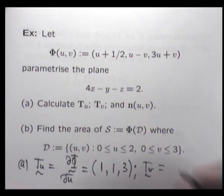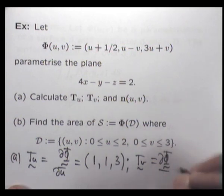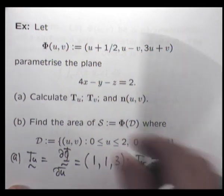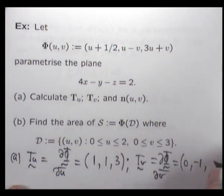And T_v, well, we just differentiate with respect to v. So that's going to be 0, minus 1 and 1.